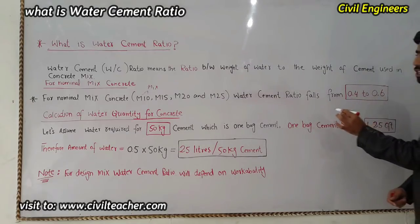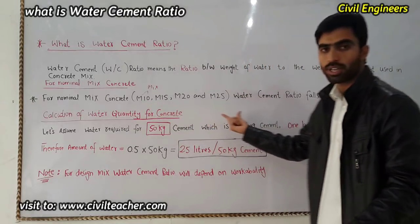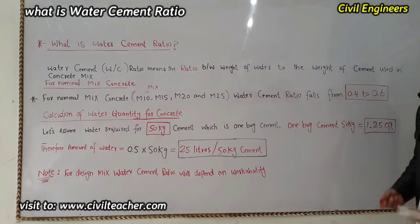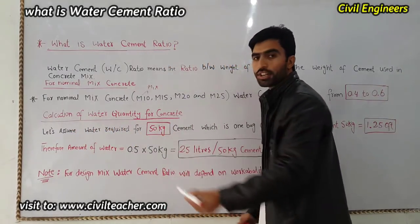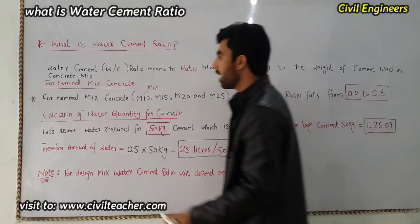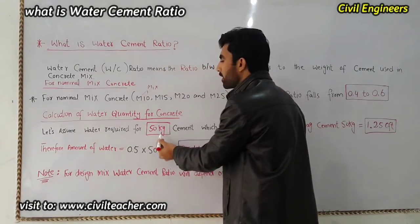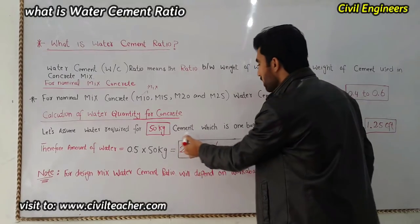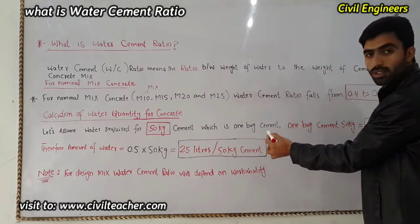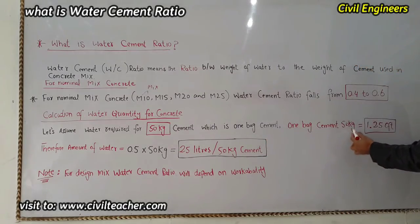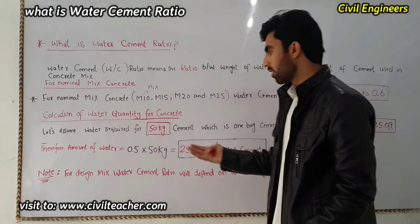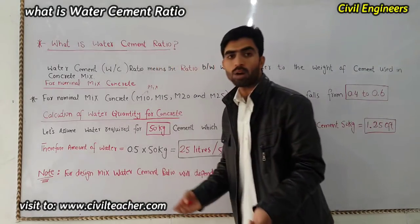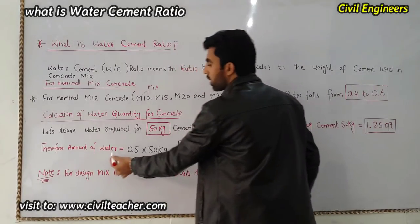So keep in mind: for nominal grade concrete, the water-cement ratio is 0.4 to 0.6. Now let's calculate the water quantity for concrete. Let's assume water required for 50 kg of cement — we know that 50 kg is one bag of cement. One bag of cement is 50 kg, and its volume is 1.25 cubic feet. Therefore, we can calculate the amount of water for concrete.